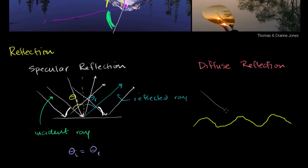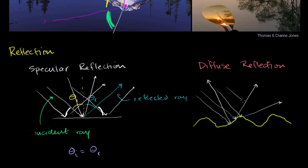If you come in at the same angle at different points on a diffuse surface, the light might reflect in completely different directions at each point. The reflected rays are going in all sorts of crazy directions and getting all mixed up.